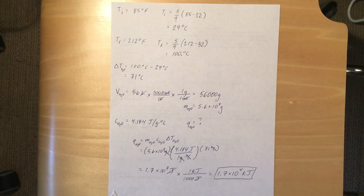Okay, so next we do the change in temperature of the water. So that's the final temperature minus the initial temperature. And we see that that's 71 degrees. 100 degrees Celsius minus 29 degrees Celsius is 71 degrees Celsius.